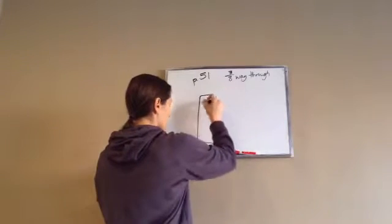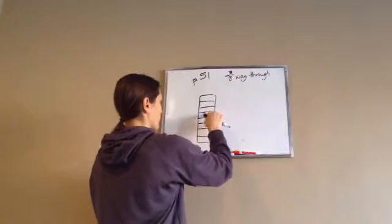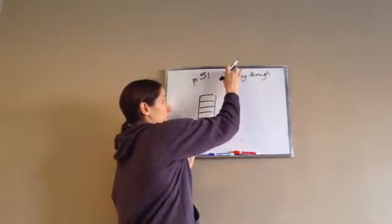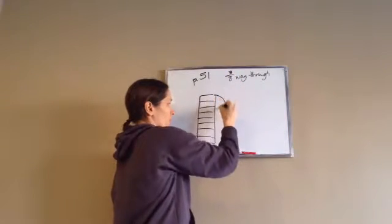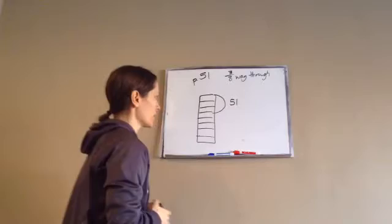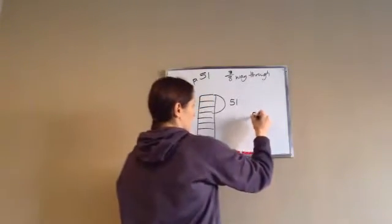Again, we're going to draw this. One, two, three, four, five, six, seven, eight. Perfect. And if he was three-eighths of the way through, one, two, three, and he was on page 51, he had read 51 pages, three-eighths of the way through.